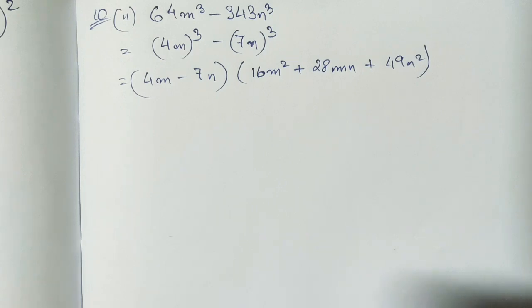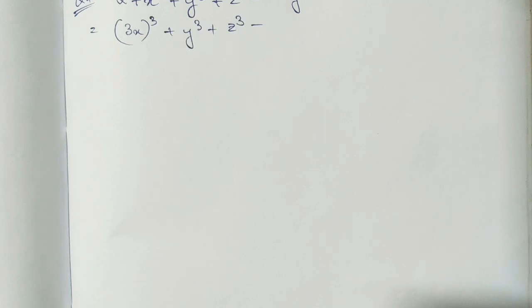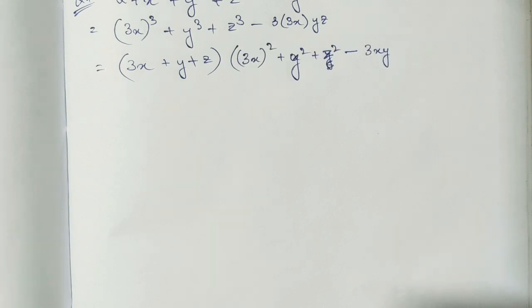Now question number 11, we need to factorize this expression. For that we have our eighth identity, that is x cube plus y cube plus z cube minus 3 x y z can be written as x plus y plus z into x square plus y square plus z square minus x y minus y z minus x z. So this is the required answer.